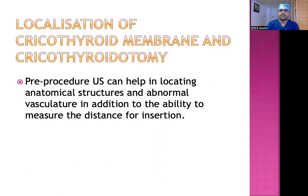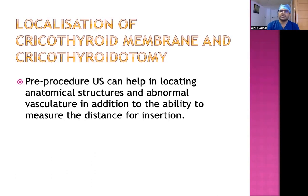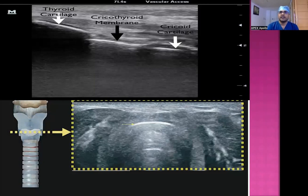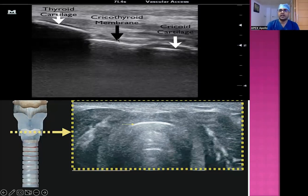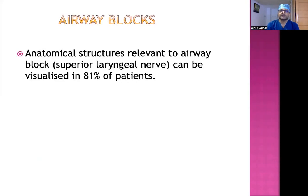Another usage is localization of the cricothyroid membrane for cricothyroidotomy. Pre-procedure ultrasound can help locate anatomical structures and abnormal vasculature, in addition to measuring the distance per incision. The thyroid cartilage and cricoid cartilage are visible, and the hyperechoic structure between them is the cricothyroid membrane. Ultrasound helps localize this membrane using the air mucosal interface to guide needle insertion and avoid complications. Airway blocks used in the OT — particularly the superior laryngeal nerve block — can be guided by ultrasound; the superior laryngeal nerve is visualized in approximately 81% of patients.